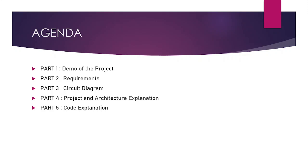The agenda for this session is divided into five parts. In the first part I will show you the demo of the project. In the second part, the requirements to build this project. The third part is the circuit diagram for connecting the PIR sensor and the LED to the Raspberry Pi. In the fourth part we will see how different modules of this project are integrated and working together, and finally we will see the Python code written for the Raspberry Pi for motion detection and email alerts.